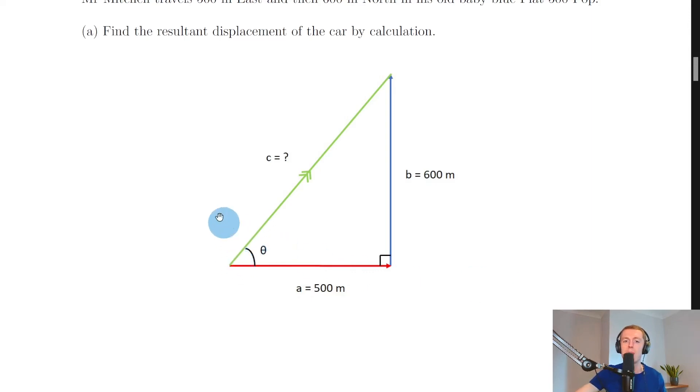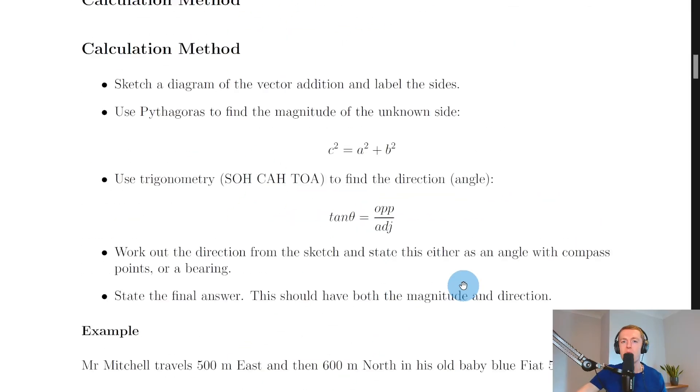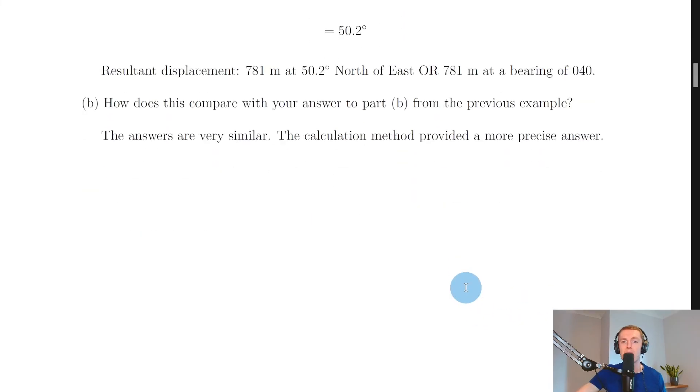Lastly, part B says how does this compare with your answer to part B from the previous example? Well, just a reminder, from the previous example, remember we got 780 meters at 50 degrees north of east, or 780 meters at a bearing of 040. So we've actually got a very similar answer using the calculation method.